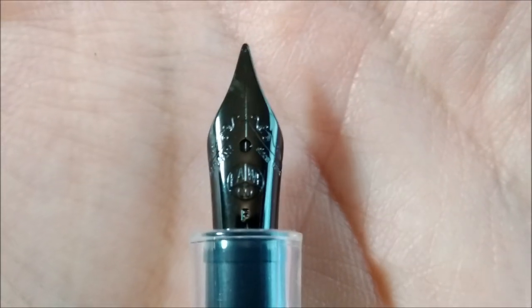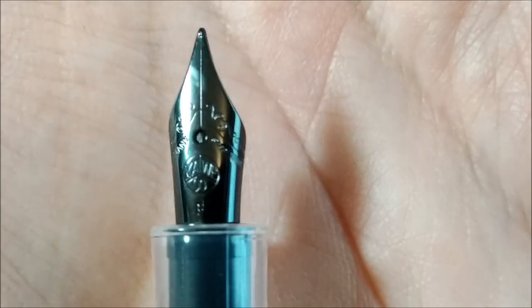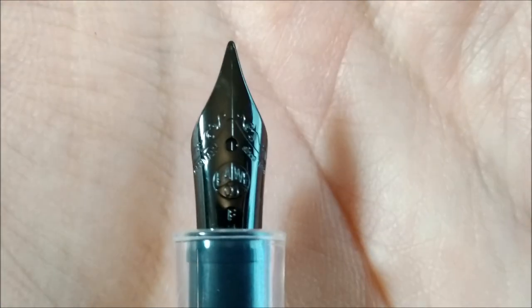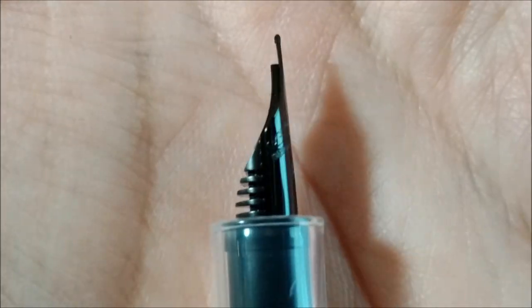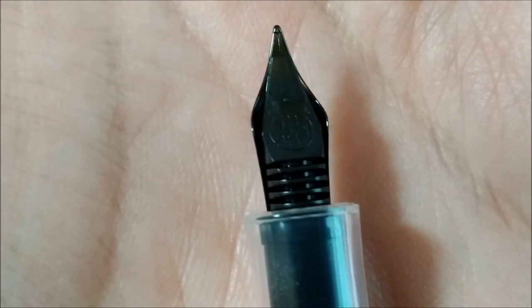The black nib is the same nib as in the other Kaweco. This is a fine one, but it has this black coating. It is a steel nib, the same fit as usual.